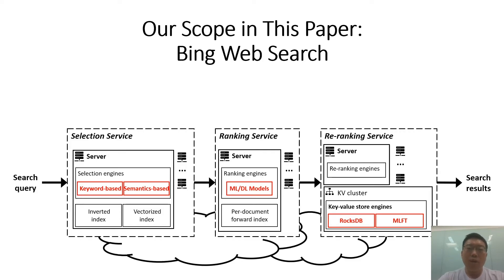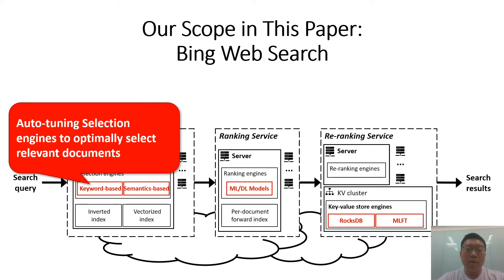Throughout our discussion, we illustrate learning augmented systems with Bing Web Search as an example. Web Search is architecturally representative of modern systems, with fundamental building blocks of networking, application logic, and data stores. Specifically, we look at five engines in the search pipeline. First, there is the selection service: given a user search query, the selection service fetches relevant documents from the web index by hosting two engines — the keyword-based engine and the semantics-based engine. We auto-tune both engines to optimize search relevance.